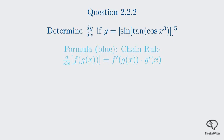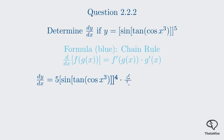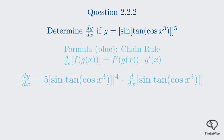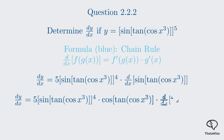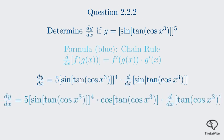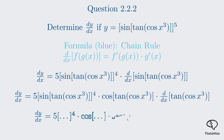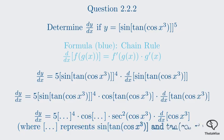The outermost layer is something to the power of 5. The derivative of u to the 5 is 5 times u to the 4, so we bring the power of 5 down and reduce the exponent by 1, giving us 5 times the entire inner function to the power of 4. We then multiply by the derivative of the inner function, sine of tangent of cosine of x cubed. Differentiating the sine layer gives cosine, so we multiply by cosine of tangent of cosine of x cubed. Then for the tangent layer, the derivative of tangent is secant squared, giving secant squared of cosine of x cubed.